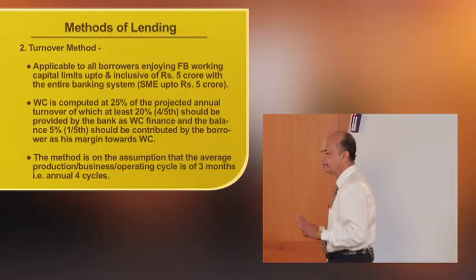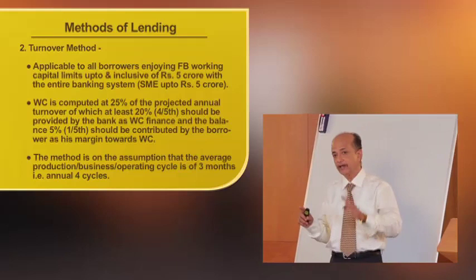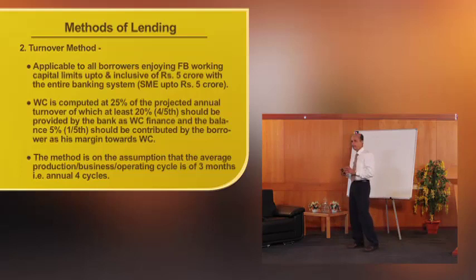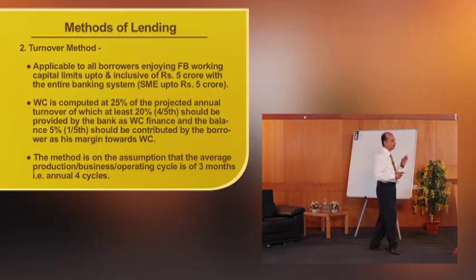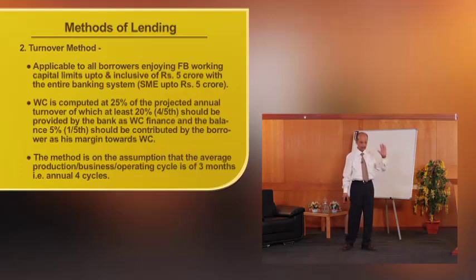This is a modification of that earlier committee recommendation. Under this turnover method, the NIA committee originally covered SSI units up to fifty lakhs only. However, this turnover method is now applicable for units up to five crores so far as SME units are concerned, and up to and inclusive of five crores for all other units.